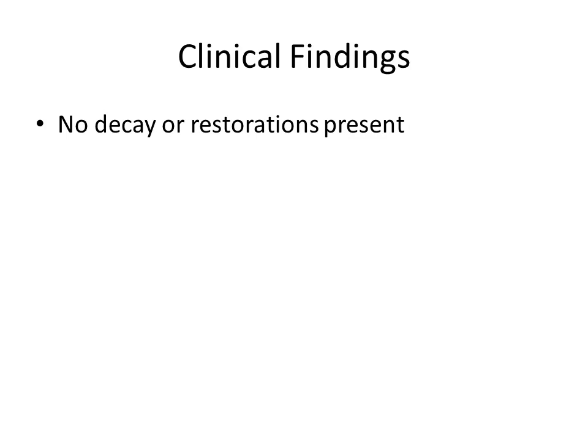No decay or restorations are present. Any existing restorations must be carefully considered for their impact on the prognosis of the removable partial denture — for example, would failure of an existing restoration compromise the success of the partial denture, and how difficult would it be to replace? Ideally, all decay should be treated prior to making the partial denture.